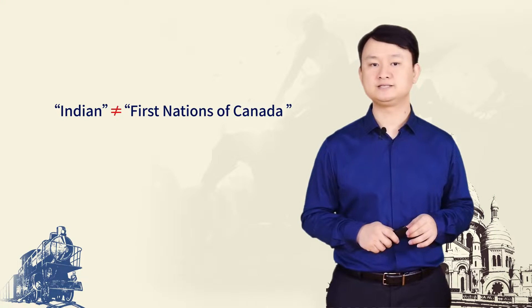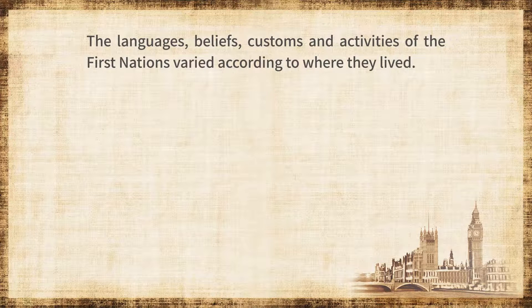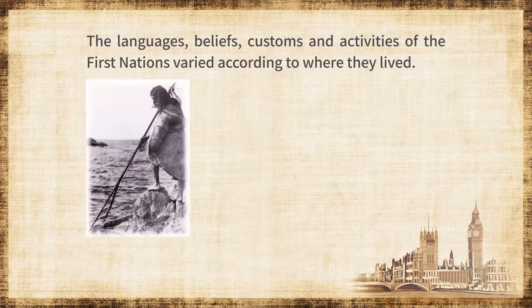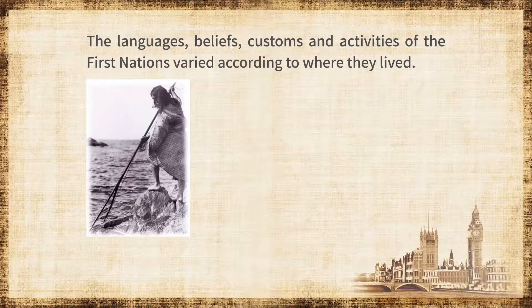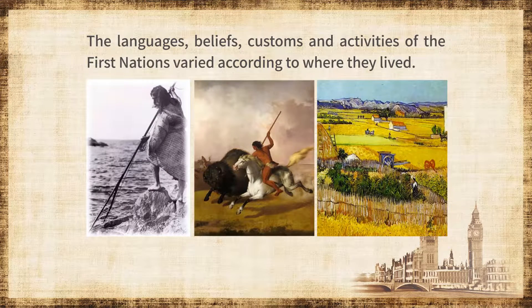The term 'Indian' was discarded because it didn't reflect the rich cultural diversity and the contributions of these peoples. The First Nations now make up about 3.8% of the Canadian population, and their numbers are increasing due to high birth rates. The languages, beliefs, customs and activities of the First Nations varied according to where they lived. The lifestyle of the people who inhabited Canada's coasts depended on fishing and hunting. Those who lived on the prairies were nomads that hunted herds of buffaloes, which provided them with food, clothing and tools. And in Central and Eastern Canada, the First Nations grew crops as well as hunted.